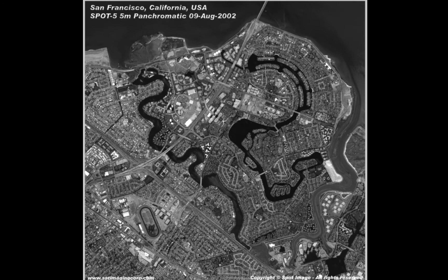We'll start off with a panchromatic image of San Francisco from a European satellite, SPOT5, taken in 2002. We'll define panchromatic in a few slides. The imagery was collected with a spatial resolution of 5 meters by 5 meters, meaning that each pixel of data represents a 25 square meter area on the surface.